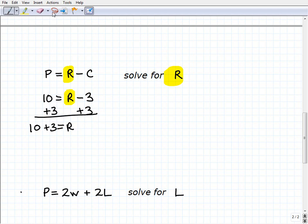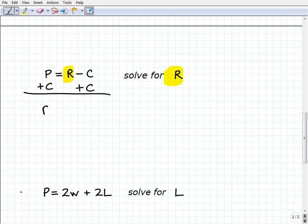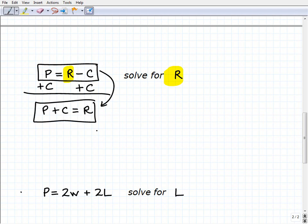So those are the exact same steps we're going to take to solve for R. What I'm going to do is add C to both sides of the equation. So I'm going to get P plus C equals R. So what I did was I took my original formula, profit equals revenue minus cost, and I rewrote it as profit plus cost equals revenue.